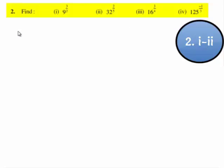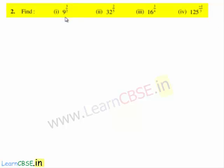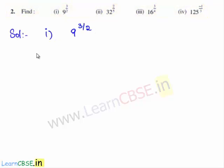Now let us move on to the second question of the exercise. The second question is: find 9 raised to the power of 3 by 2, 32 raised to the power of 2 by 5, 16 raised to the power of 3 by 4, and 125 raised to the power of minus 1 by 3. Let us first solve the first bit: find 9 raised to the power of 3 by 2. We shall write 9 in its irreducible factors. The prime factors of 9 are 3 and 3, as 9 can be written as 3 times 3, which is 3 squared.